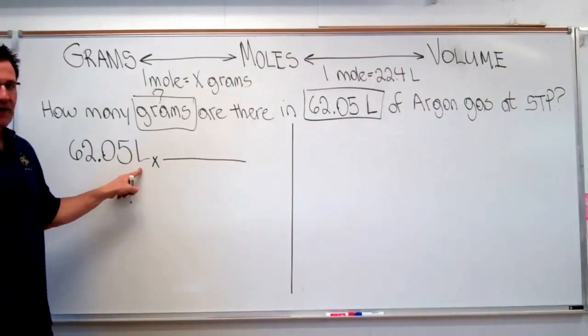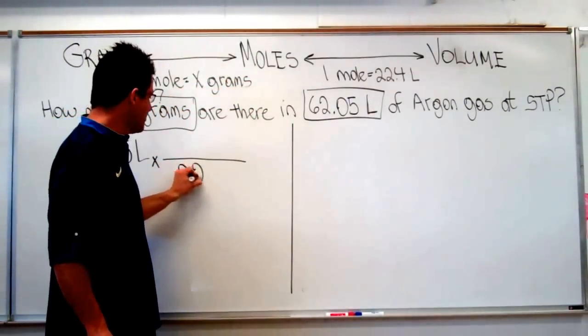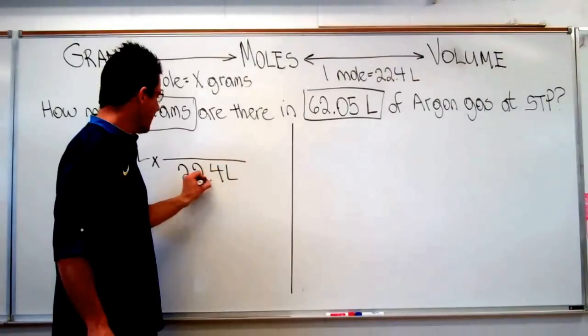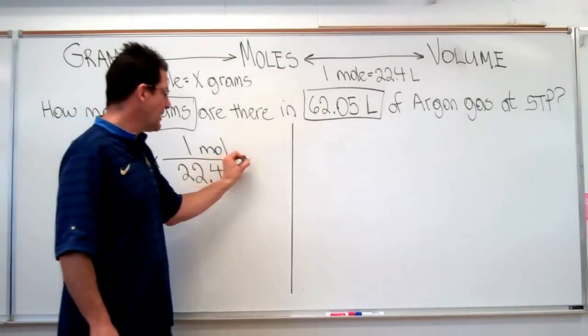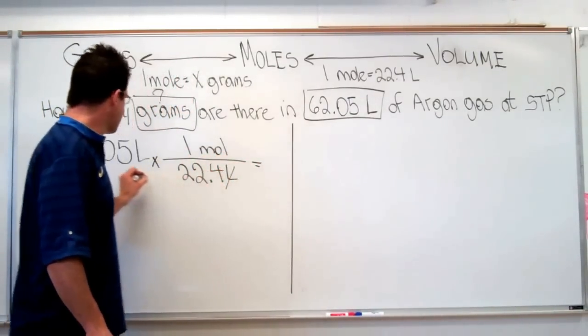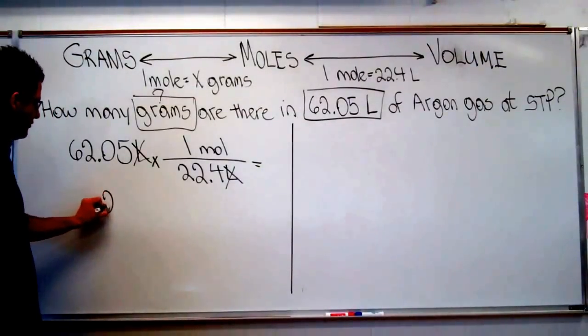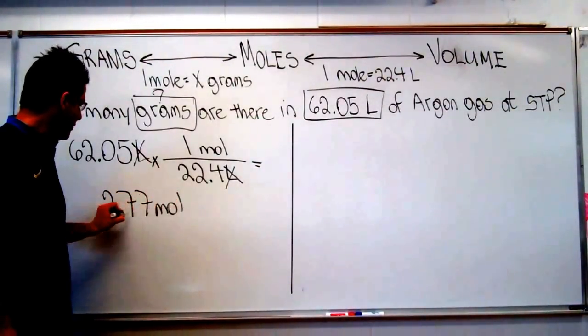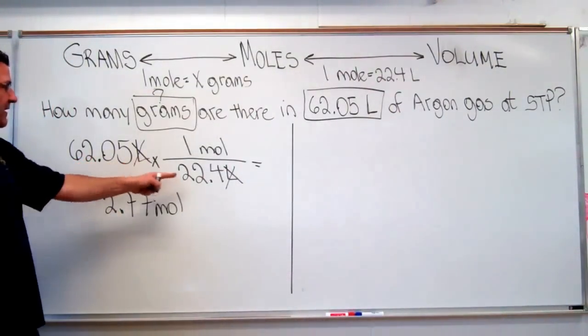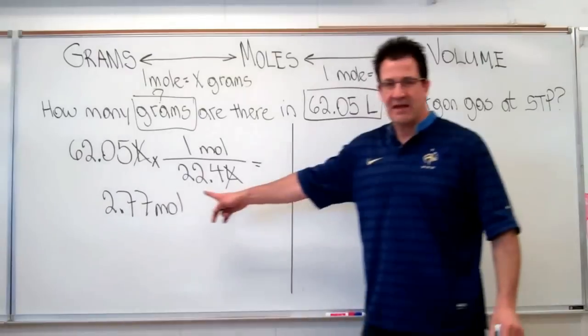We have liters on the top here. That's our conversion factor. We put 22.4 liters on the bottom. The mole goes on the top because that's the unit that we want. Our liters cancel, and we're left with 2.77 moles. 62.05 divided by 22.4 is equal to 2.77 moles.